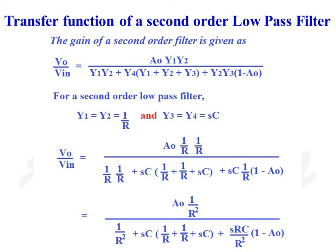Now let us discuss the transfer function of a 2nd order low pass filter. The gain is given as V0/VIN = A0·Y1·Y2, the whole divided by Y1·Y2 + Y4·(Y1 + Y2 + Y3) + Y2·Y3·(1 − A0).